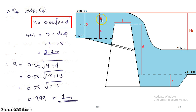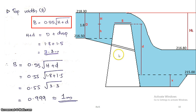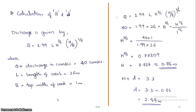We have H + D. H + D equals D plus the drop — where D is the full supply depth (1.8 m) and the drop is the difference between upstream and downstream bed levels (1.5 m). So H + D = 1.8 + 1.5 = 3.3 meters. Next is the calculation of H and d individually.